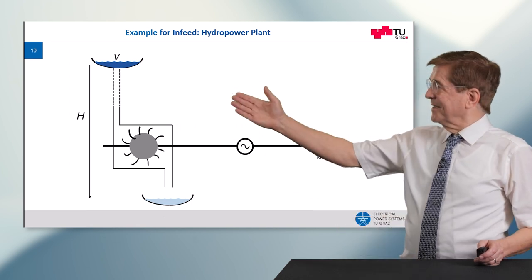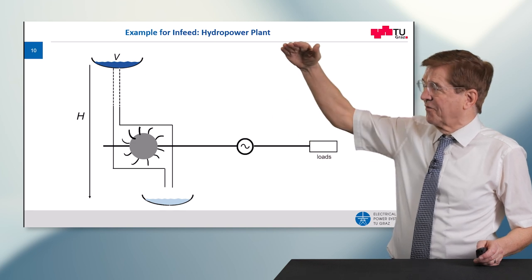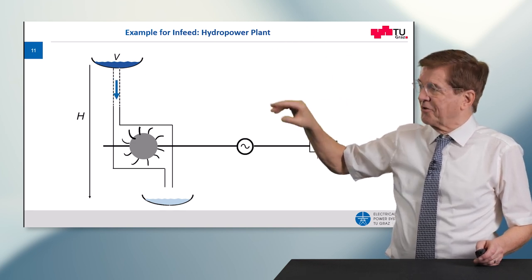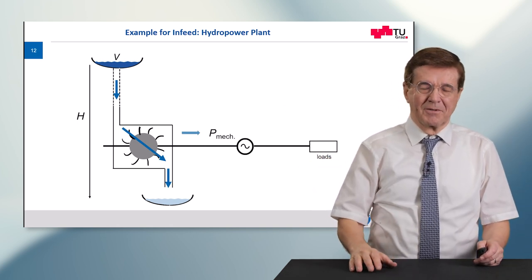Here you can see to my right side a typical water hydropower plant. There is a basin of water where the water is stored. It runs down through the turbine, turns the turbine, and is discharged into a lower basin.